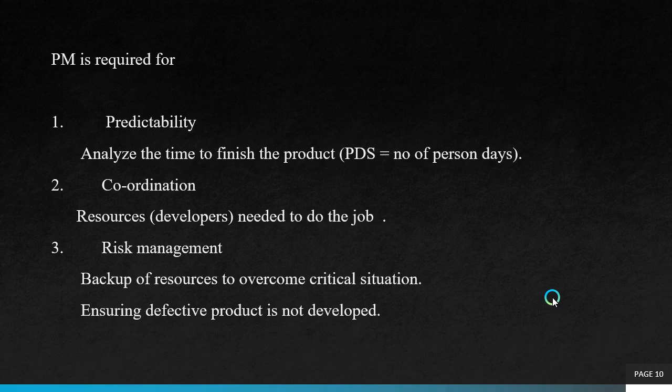Project management is required for predictability, coordination, and risk management. Predictability means analyzing the time taken for the product to be completed. Coordination refers to the resources — meaning the developers — needed to do the job, and their coordination to complete the project. Risk management involves backup of resources to overcome critical situations and ensuring that a defective product is not developed.